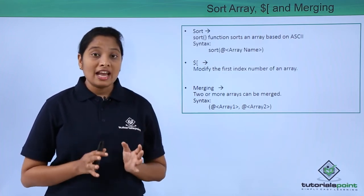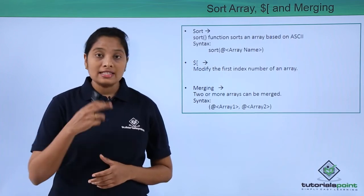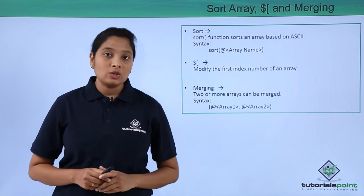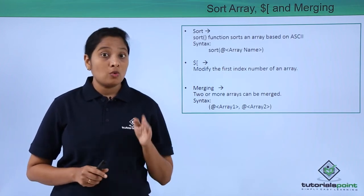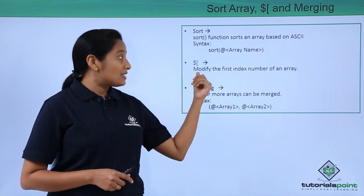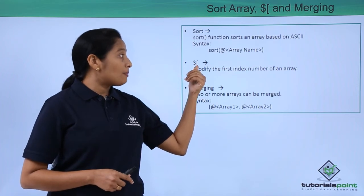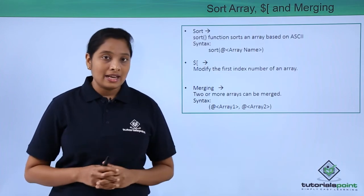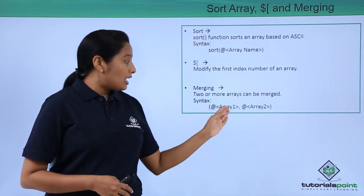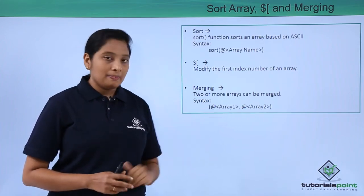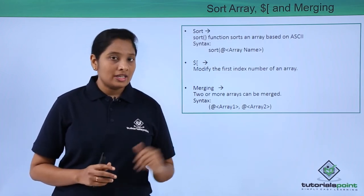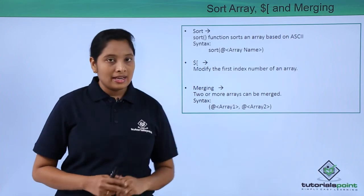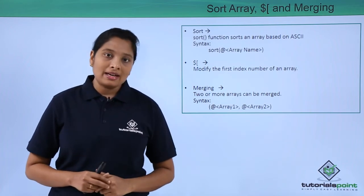If you want to change the index number of all arrays inside your Perl script, use a special variable assigned to a number. For example, if you want to assign one, just assign dollar square bracket equal to one. To merge arrays, just use array names followed by a comma — you can merge two or more arrays using a comma.